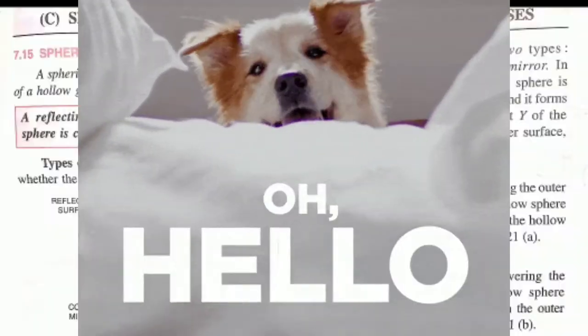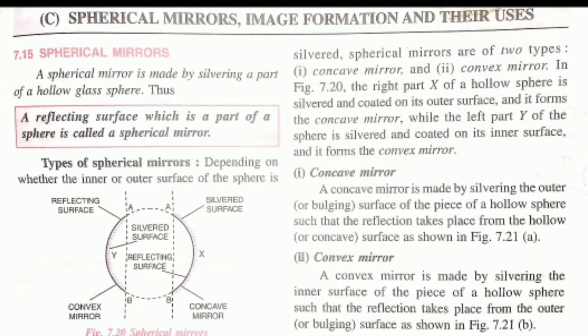Today we are going to read about the third exercise which is on spherical mirrors, image formation, and their uses. In this exercise, the sign convention topic has been reduced from the syllabus. The important numericals based on sign convention are not there, but sign convention is still in the 10th class. Let's finish up with the things which are in your syllabus.